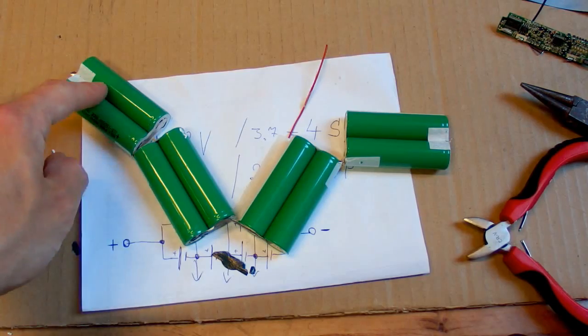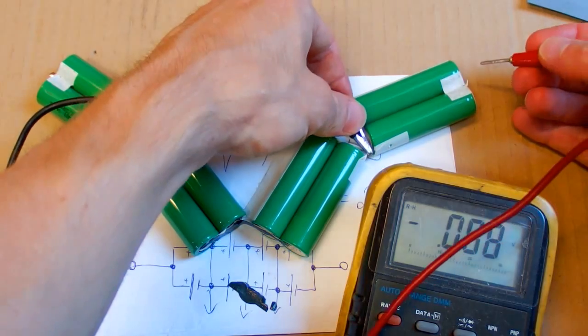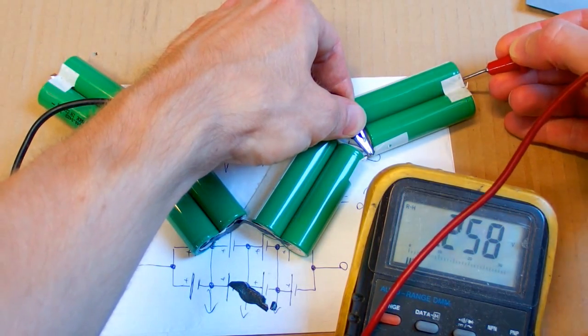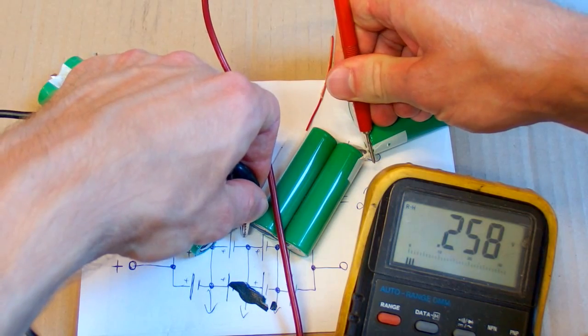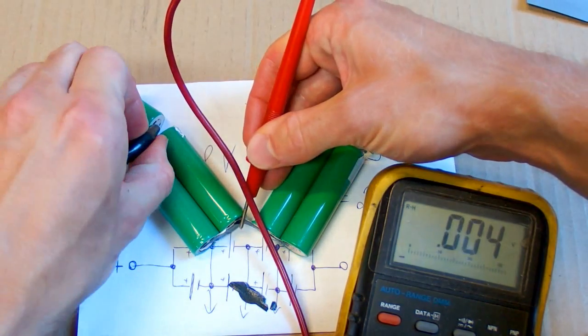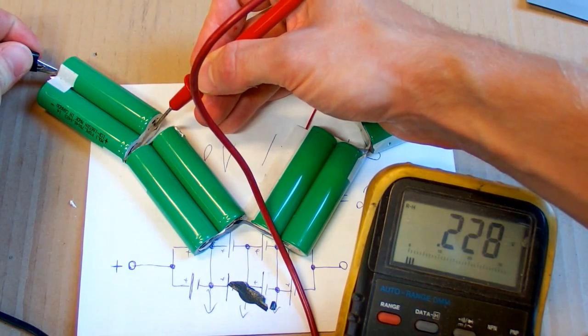There are four parallel pairs, and they are in series. Now let's try to measure the voltages of those pairs. 0.26, 0.26, 0.26 again, 0.25, and 0.23. That's quite low.